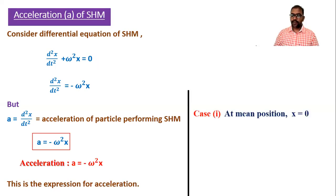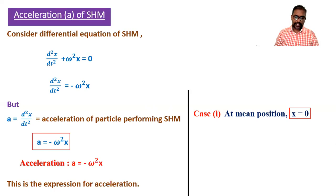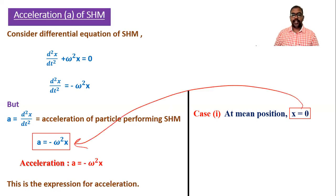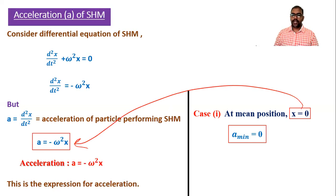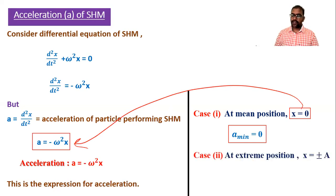We can write two cases for the acceleration formula. Case number one: at mean position, also called equilibrium position, x = 0. If we substitute x = 0 in this formula, acceleration comes out to be 0. So we can say minimum acceleration is at mean position.